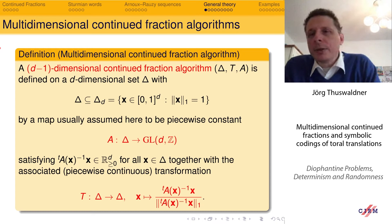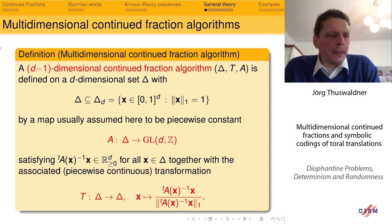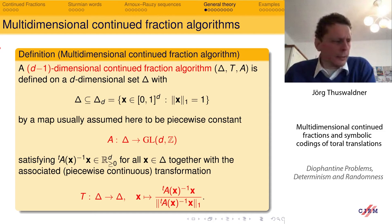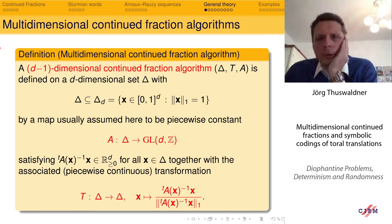This is the first non-trivial example, the first application of the theory we set up. Now let me briefly review the general theory developed to get results of this kind. Later I will show applications to the Selmer algorithm, Cassaigne-Selmer algorithm, and we can also do it for Jacobi-Perron and Brun in order to play this game for rotations on the three-dimensional torus.